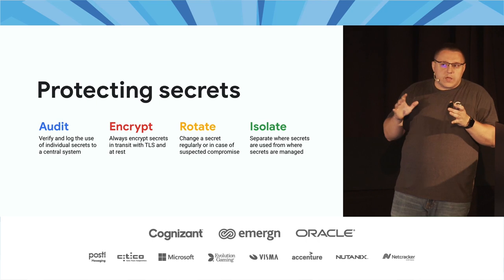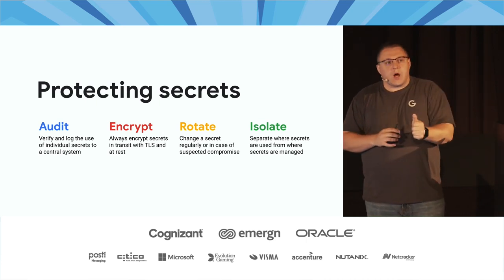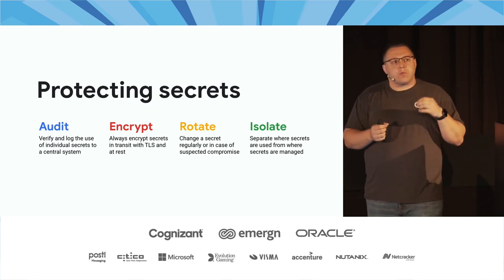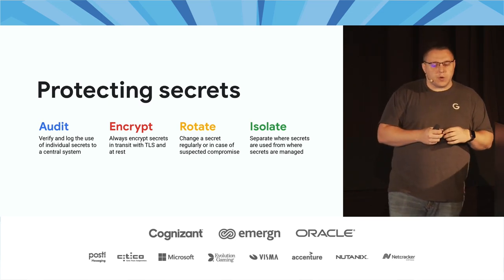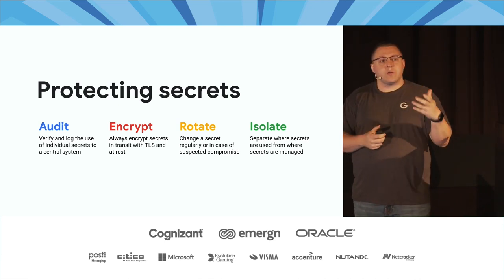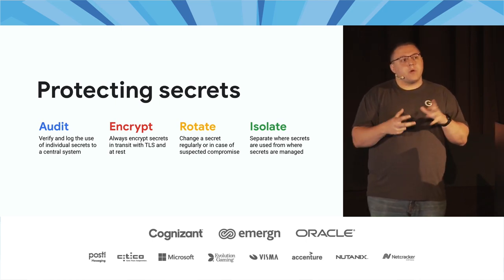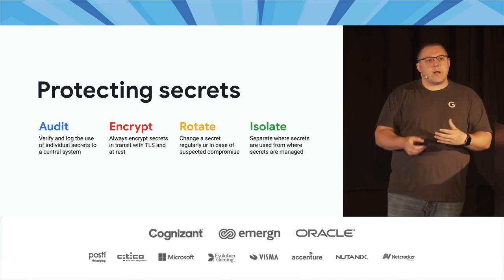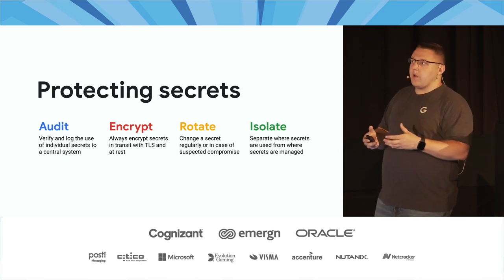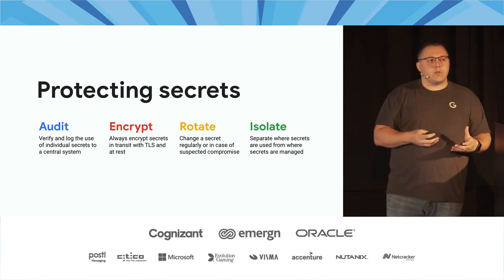There are four key ways to protect secrets. The first is auditing — not really a way to protect secrets, but rather to respond in the event of a breach. Verify and log the use of every individual secret in a system, preferably in a centralized system. Whatever you're using for logging today — Splunk, Stackdriver, or the ELK Stack — you should create a separate sink and generate log entries or an audit trail anytime a secret is accessed.